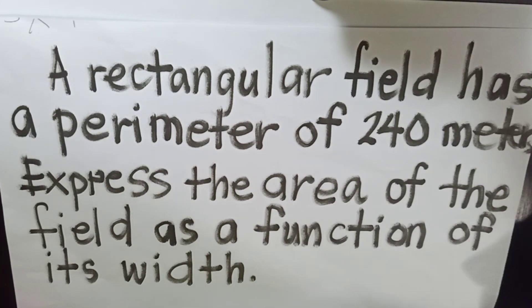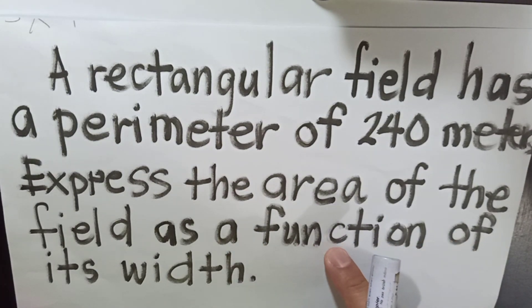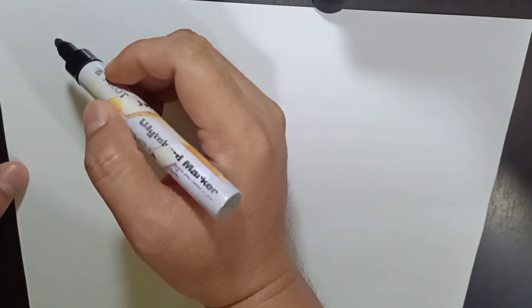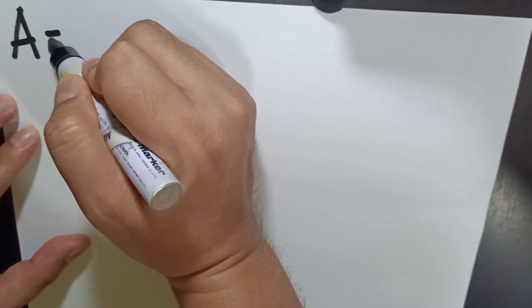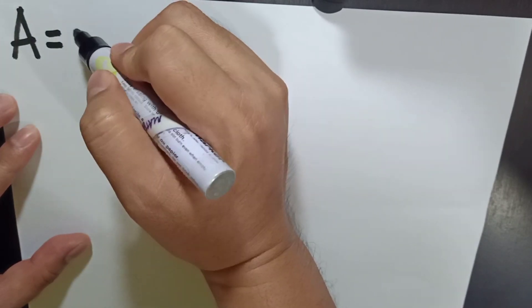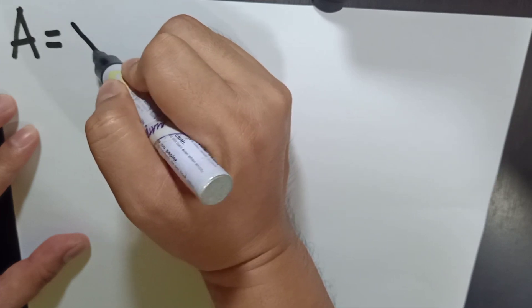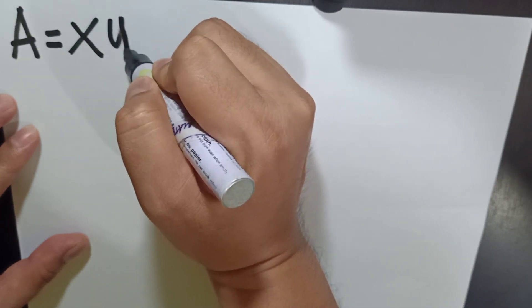Then, the area of the field is given by A. If we are going to write the representation, in geometry, area is denoted by length times width. Algebraically, since we are going to represent x and y as the dimension, we have x times y as the representation.